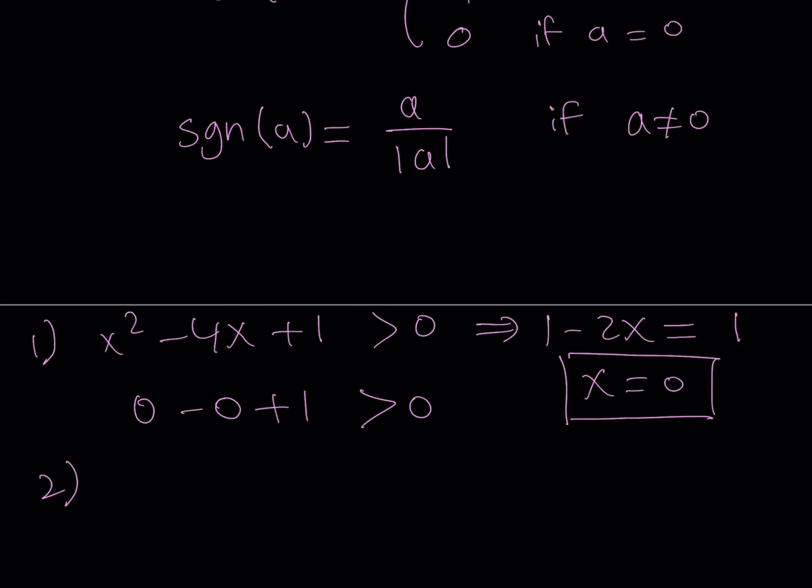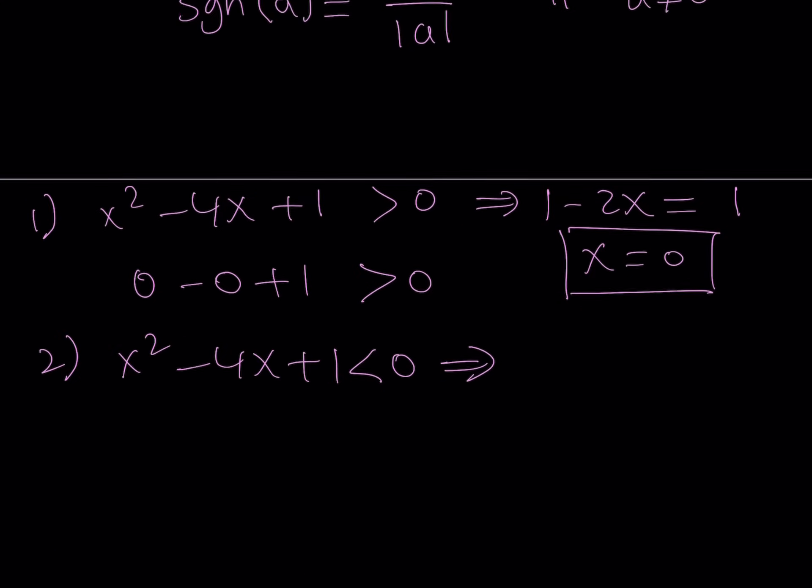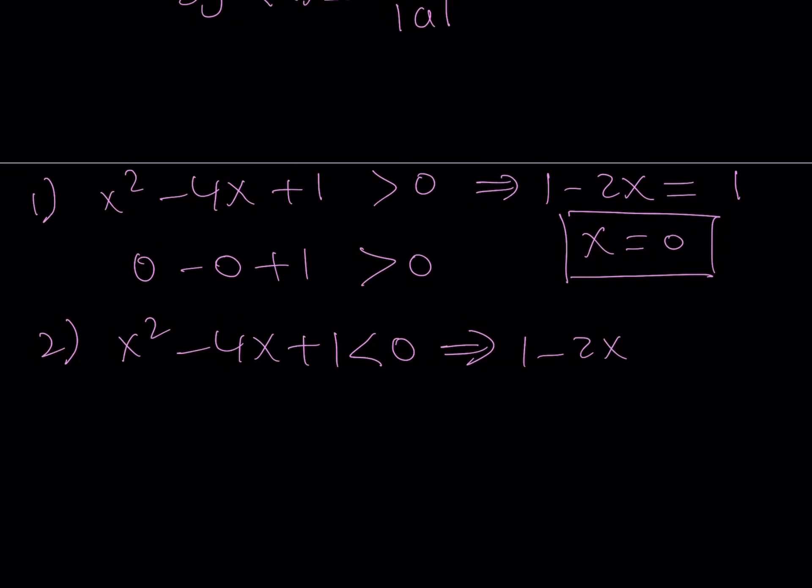Let's look at it case by case. The second case is, I want this to be negative. Okay, great. Then, what is that supposed to mean? That means whatever is inside the signum function is negative. In that case, the result would be negative 1. So the signum would output negative 1. So that means 1 minus 2x is equal to negative 1, which means 2x is equal to 2, which means x equals 1.